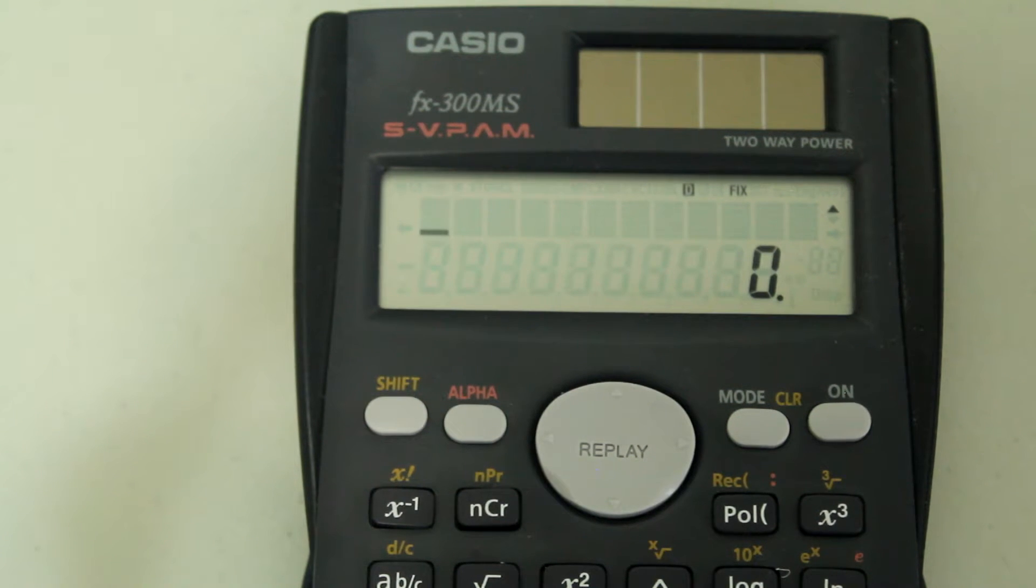Hey guys, in this video we're going to discuss how to fix a rounding problem on your Casio scientific calculator. The one I have here is a FX300MS, but this is applicable to similar model calculators as well.